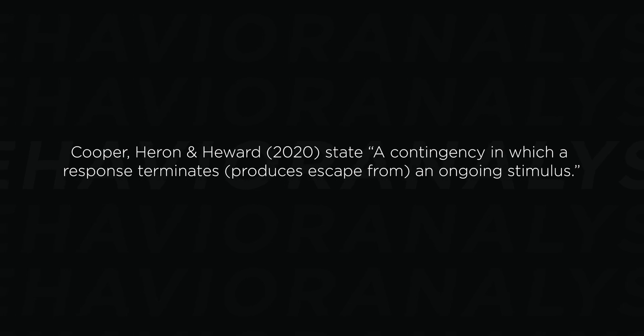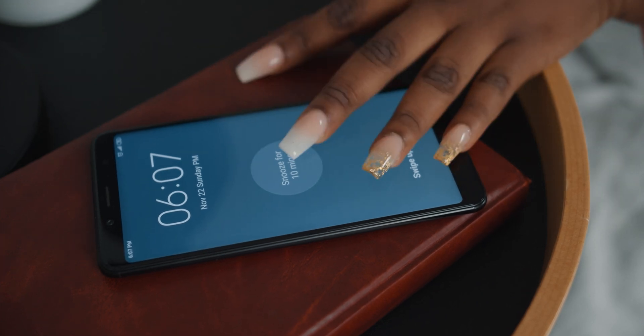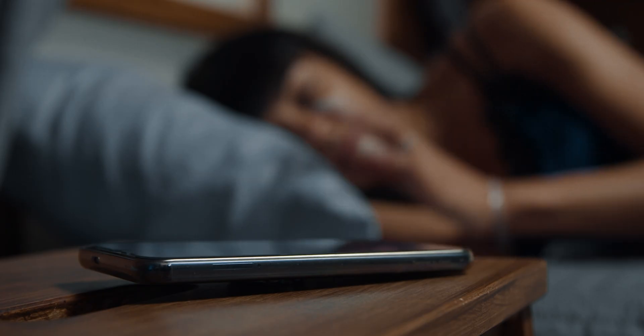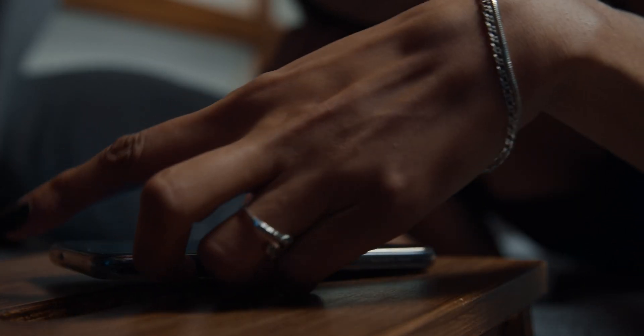For an example, let's look at ways in which you may escape an aversive or disliked situation or stimulus. Quickly defining an escape contingency, Cooper, Heron, and Heward state a contingency in which a response terminates or produces escape from an ongoing stimulus. In the morning when you wake up from an alarm clock and you turn it off, that is a perfect example of an escape contingency. The sound of the alarm is the aversive stimulus occurring, and as a result of you pressing it off or snoozing, your behavior has changed the environment — it removes or terminates that aversive stimulus, that alarm. Said simply, you have escaped the alarm sound as a result of your behavior, at least temporarily if you're a chronic snoozer.